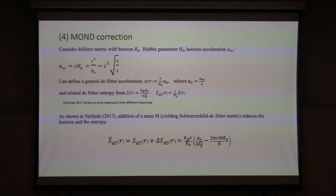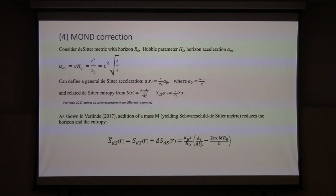So A₀ is stated as CH₀. This is slightly off, but it's certainly within order of magnitude. The correct observational coefficient is 0.18 instead of 0.5, but that's reasonably close.